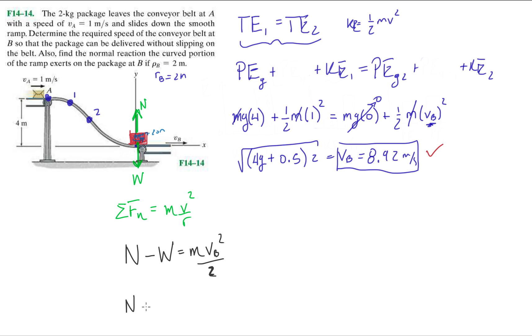So let's see. The normal is equal to, that's what I'm looking for. The normal is equal to M times 8.92 squared divided by 2 plus Mg. So let's calculate all this out.